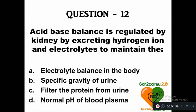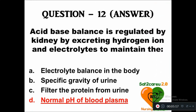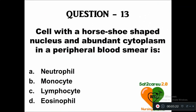— option A: electrolyte balance in the body, B: specific gravity of urine, C: filter the protein from urine, D: normal pH of blood plasma. The correct answer is to maintain the normal pH of blood plasma.